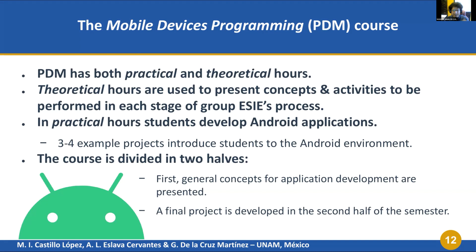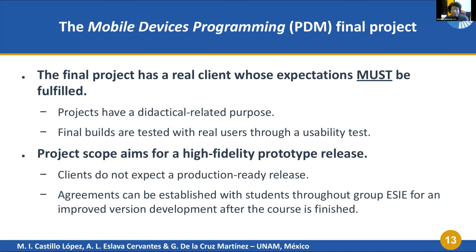The course is divided into halves. In the first half, the example projects and the general human factors for mobile development are presented. The latter half is dedicated to the course final project: an application development with an actual external client. Such clients are usually academics, and their needs — which the group SEA calls the development of computerized aids for didactic purposes — allow the professor to manage the course projects under a familiar framework and objectives.